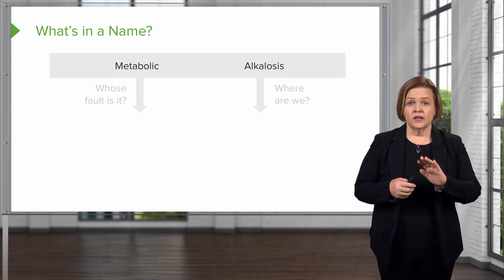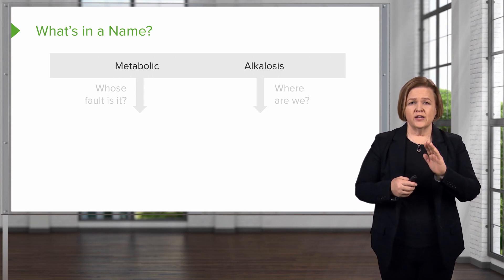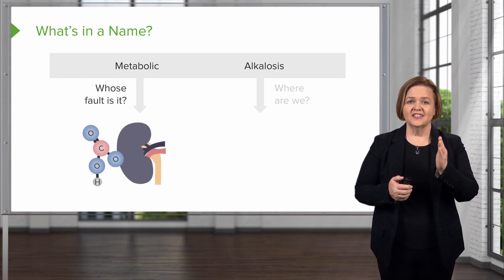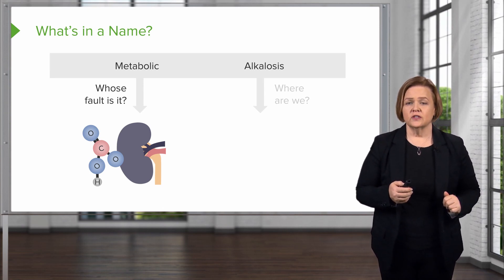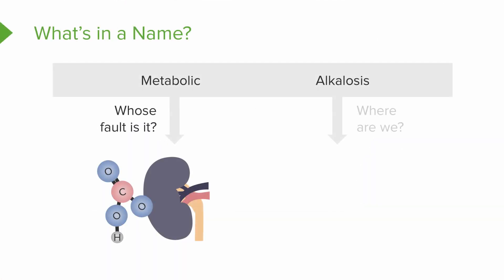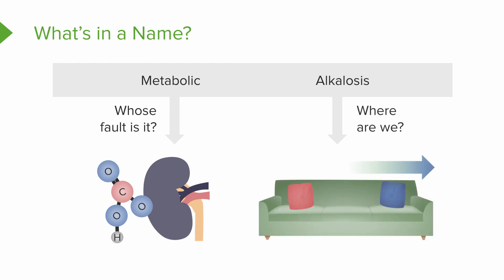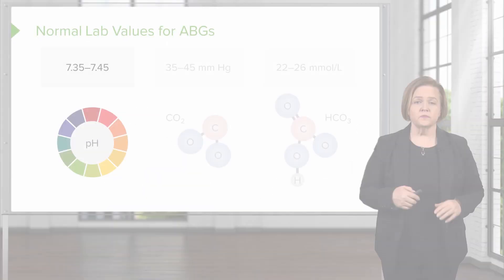What about metabolic alkalosis? The first part of the name tells me whose fault it is. If it's metabolic, that's the kidneys and the bicarb level. If I'm in alkalosis, where are we on the couch? Is our pH less than 7.35 or greater than 7.45? It's greater than 7.45 — we're in alkalosis. So metabolic alkalosis tells us the reason we're in alkalosis is the metabolic system's fault.